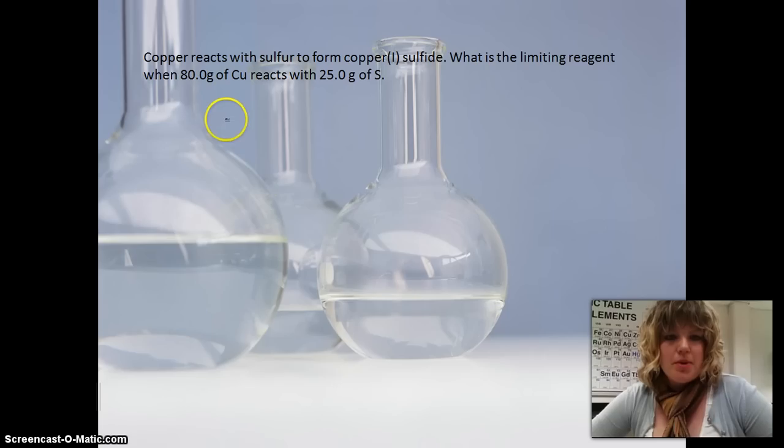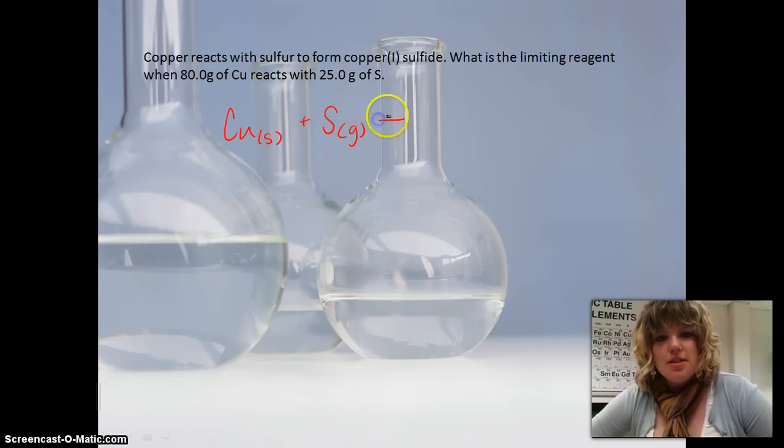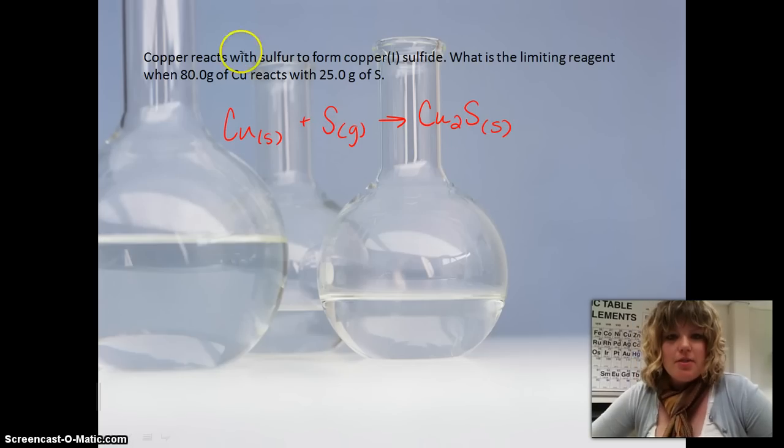So we're going to change it up a little bit with our equation. We're going to use copper as a solid plus the sulfur gas, and it makes copper 1 sulfide. So sulfur is a negative 2, so we crisscross those, making that a solid. And if we balance this, we'll put a 2 out here, and everything else is balanced up.